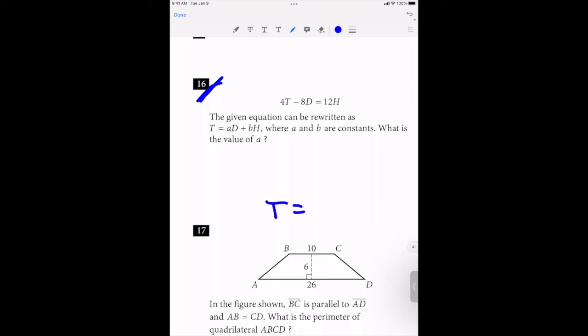T is equal to aD plus bH. And let's start off with what we've got here. We've got 4T minus 8D is equal to 12H. I think my first move is to get everything on the quote-unquote correct side.